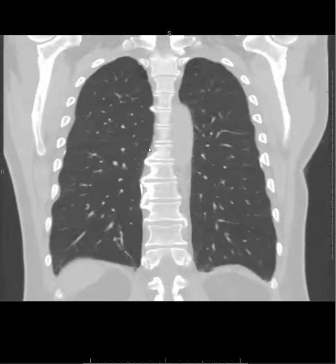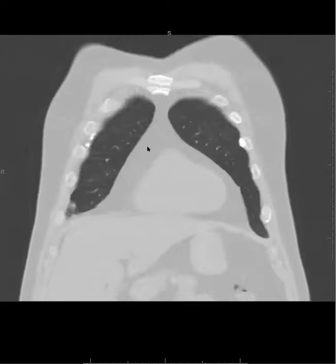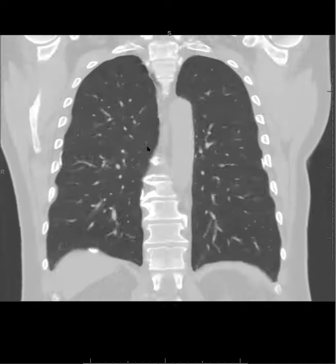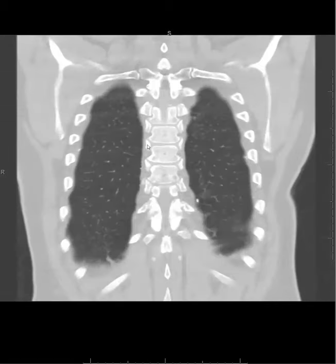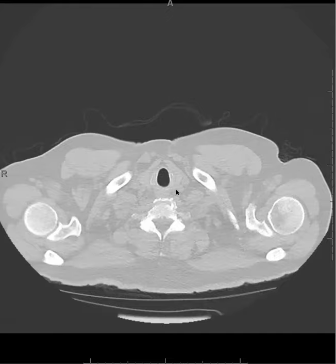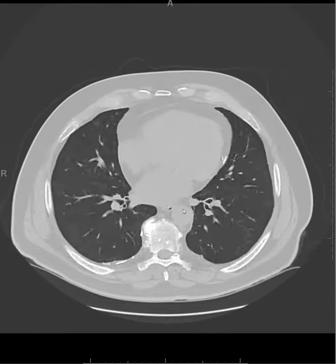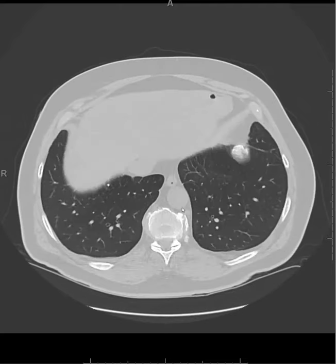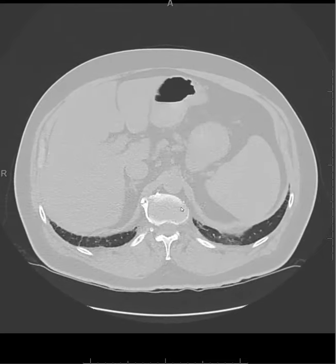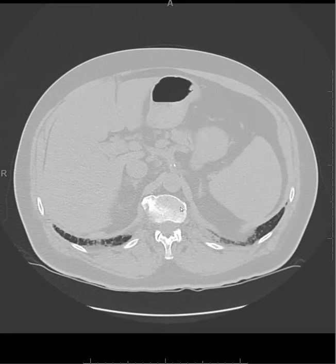Another little pearl: I've seen people label patients with asbestos-related pleural disease as having asbestosis. Remember, asbestosis really means that someone has pulmonary fibrosis in the setting of asbestos exposure. So unless you're sure they have pulmonary fibrosis, you should not be labeling someone as asbestosis. The pulmonary fibrosis pattern they typically have is that of a UIP pattern.